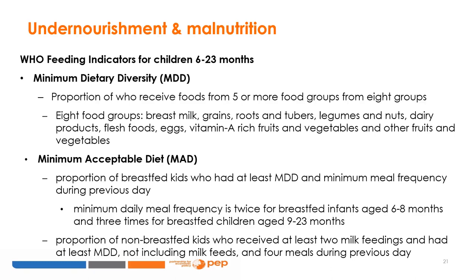To give a sense of how food quality is measured, we look at two infant and young child feeding indicators: minimum dietary diversity and minimum acceptable diet. Minimum dietary diversity captures the proportion of children 6 to 23 months of age who receive foods from 5 or more of the 8 food groups: breast milk, grains, roots and tubers, legumes and nuts, dairy products, flesh foods, eggs, vitamin A-rich fruits and vegetables, and other fruits and vegetables. The minimum acceptable diet indicator measures the proportion of children 6 to 23 months receiving a minimum acceptable diet, combining minimum dietary diversity with a minimum meal frequency dependent on age and breastfeeding status.